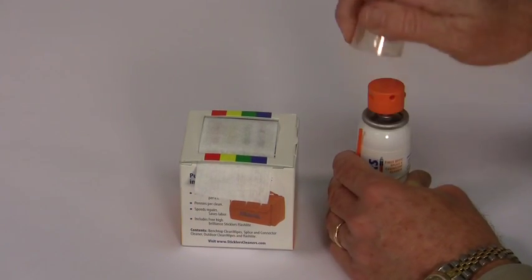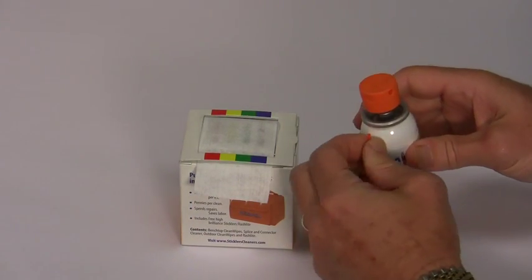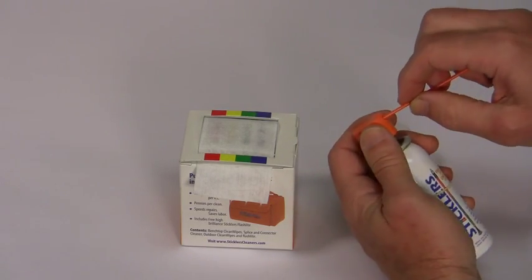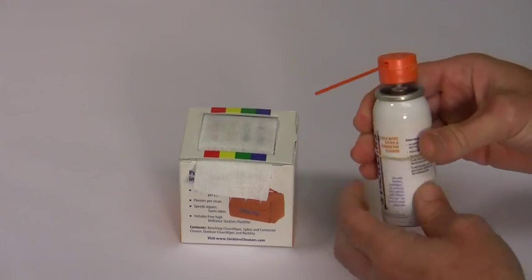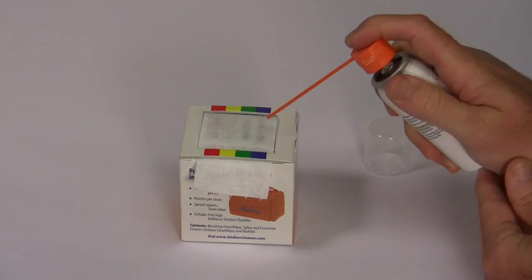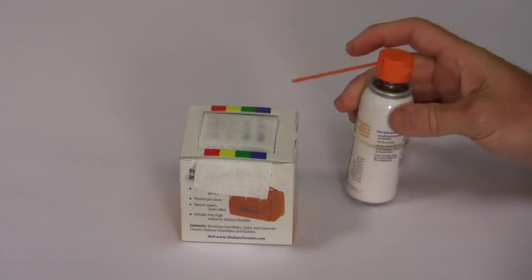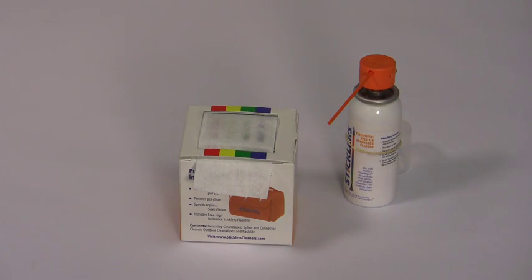For pinpoint dispensing using the spray tube, first remove the cover cap, then attach the orange spray tube to the slot inside the well. Press the Triton to supply small amounts of fluid at the desired spot. Remember, always move from wet to dry when cleaning.